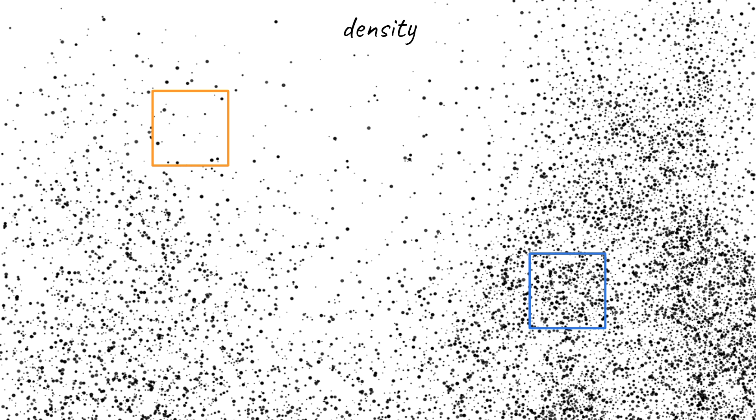Now let's take some imaginary surface and assume that through this surface some amount of particles are passing. If we take another region with the same area but at the denser region, it is obvious that the amount of particles passing through the surface will increase. This means that flux is related to the density of the substance — we can say flux is proportional to the density.